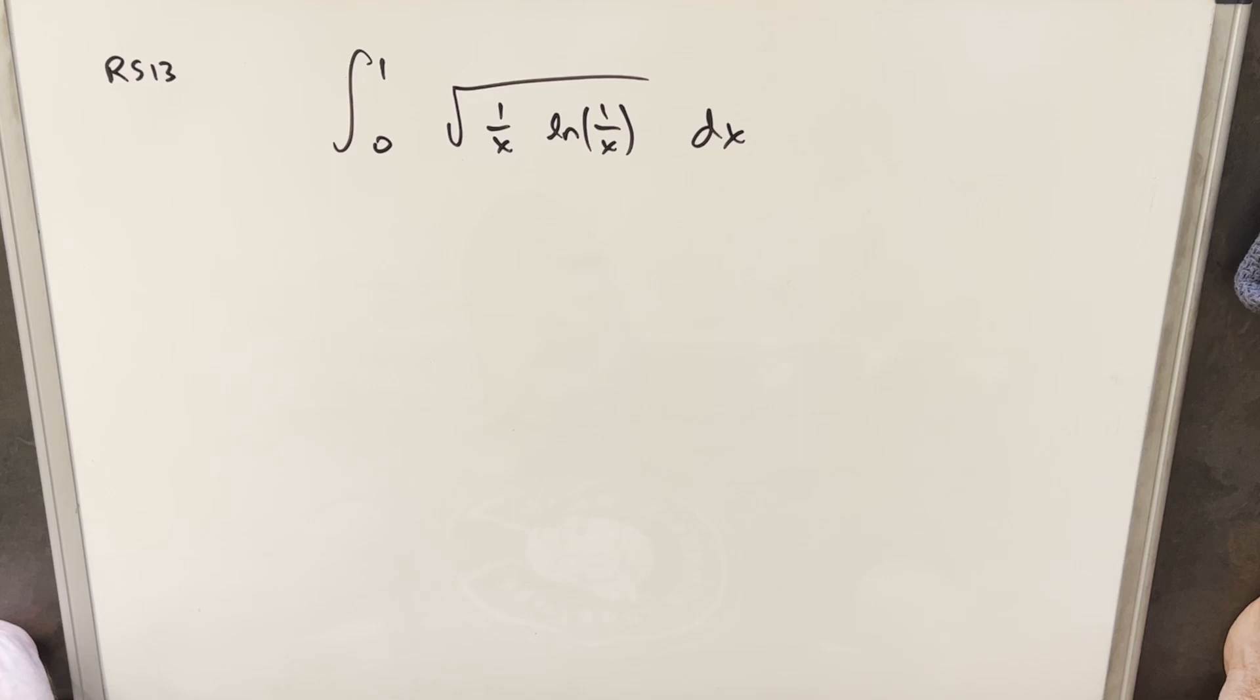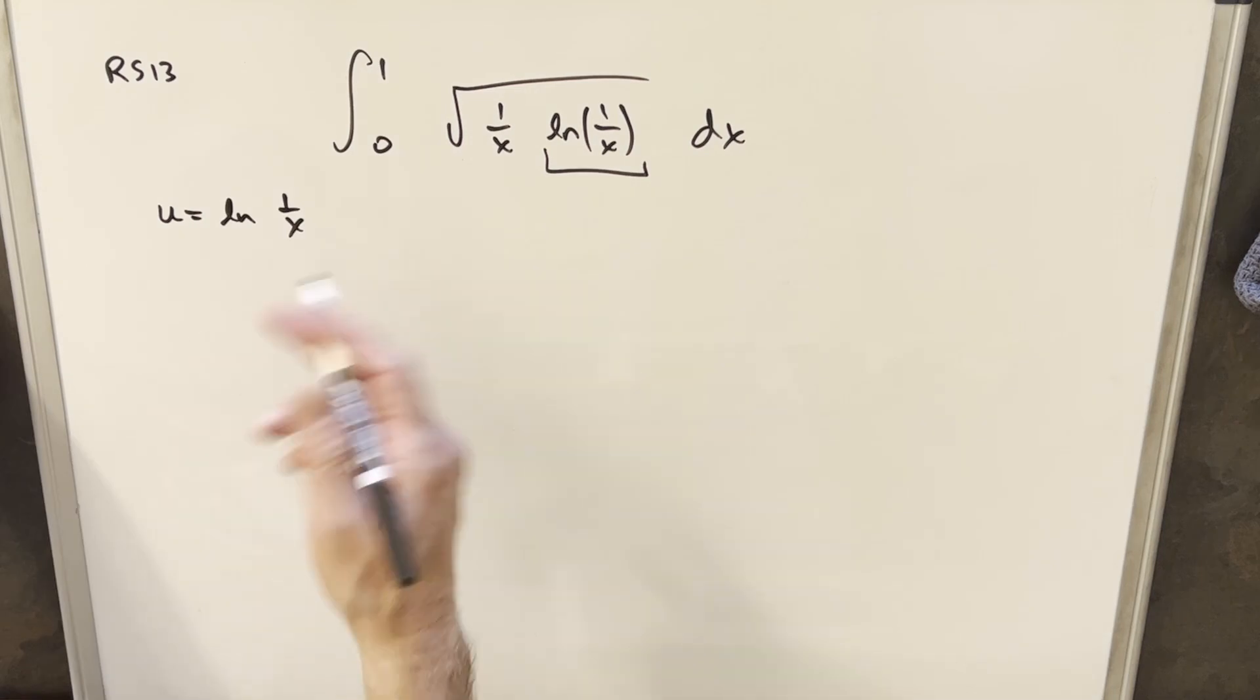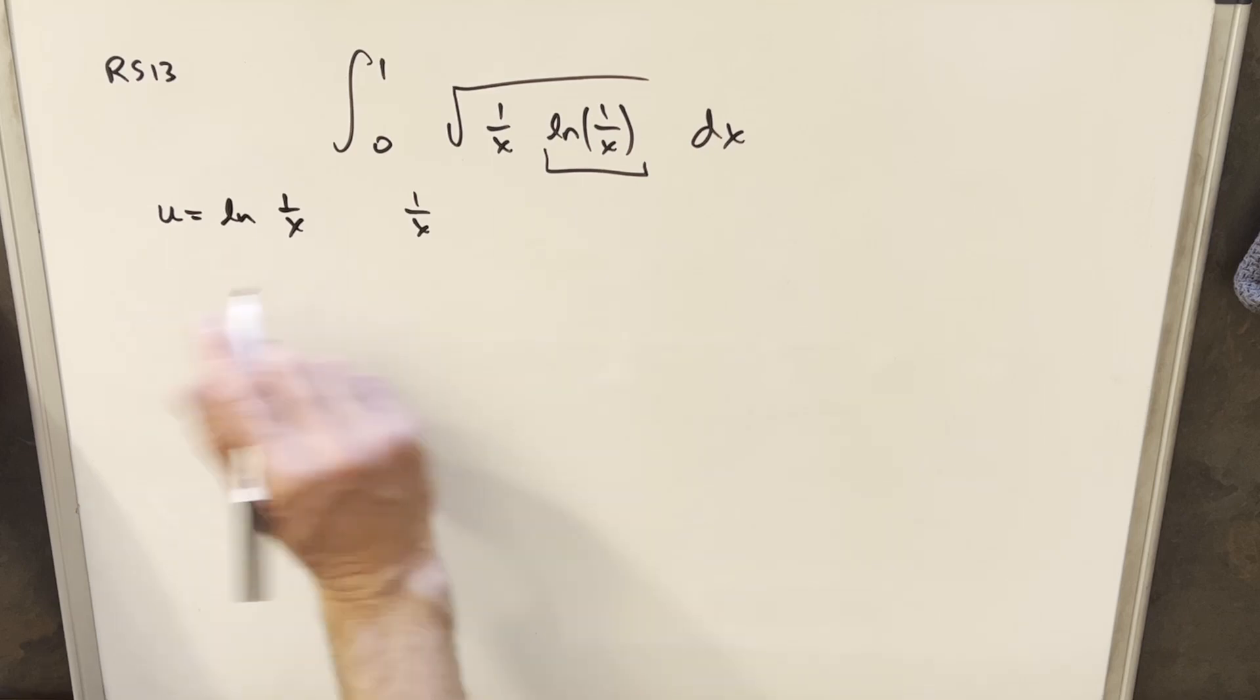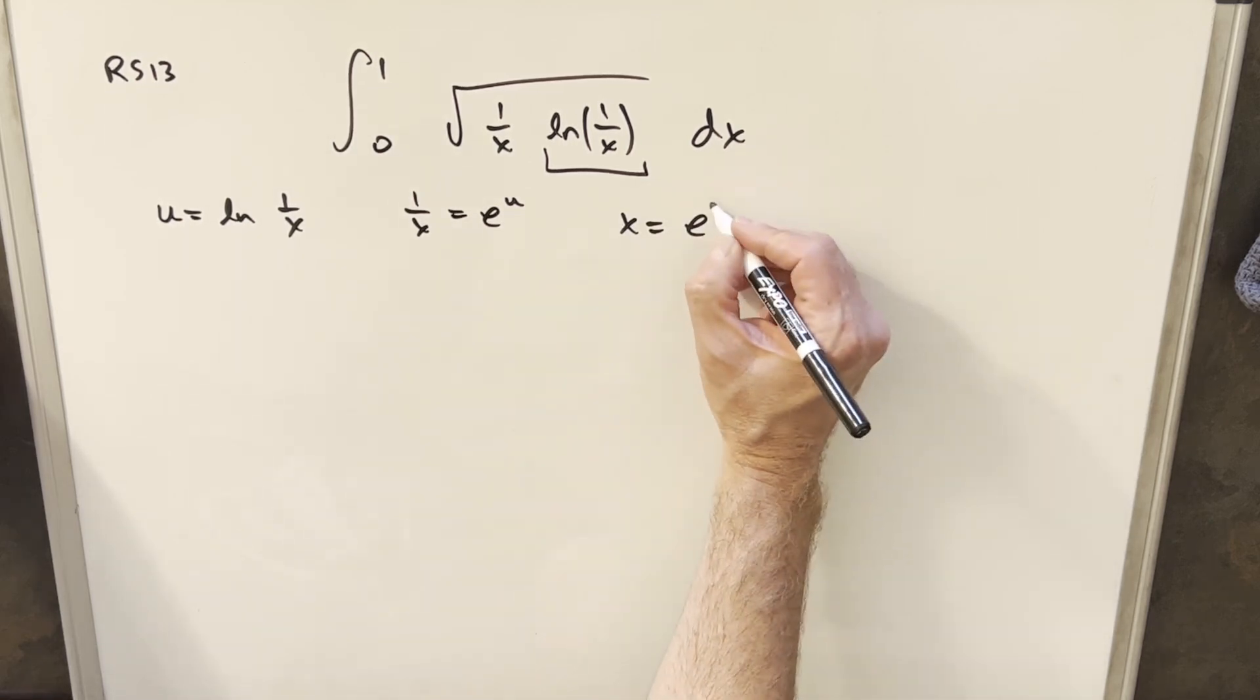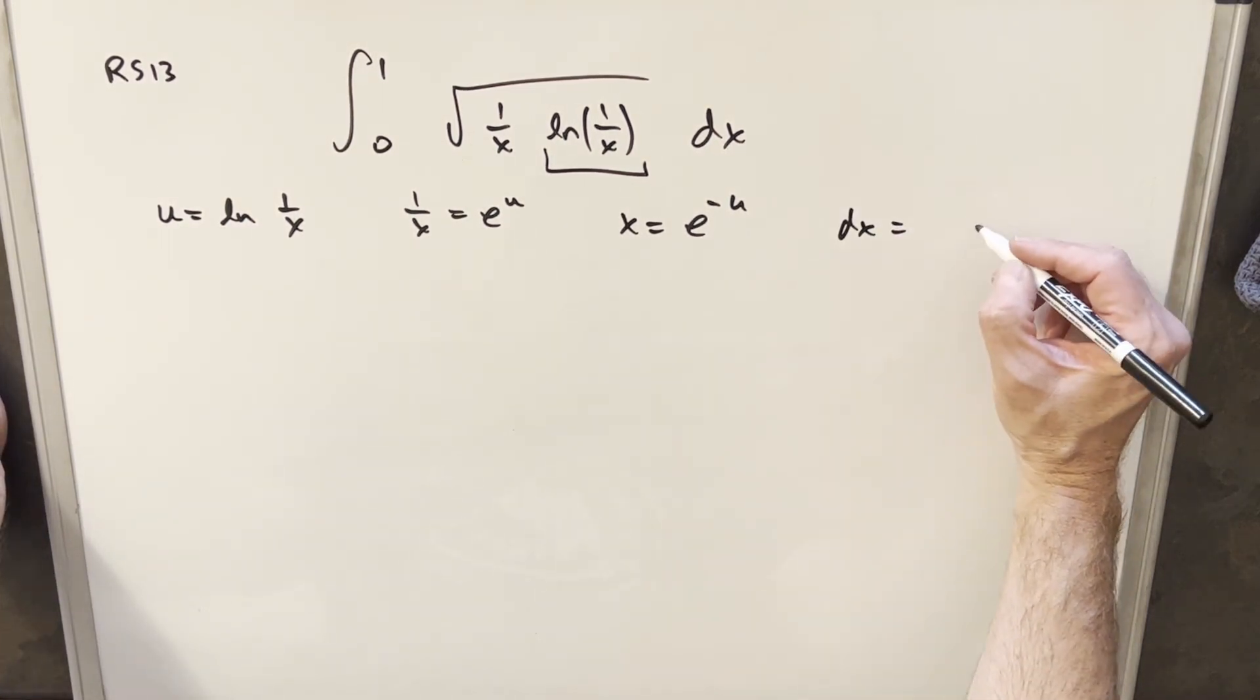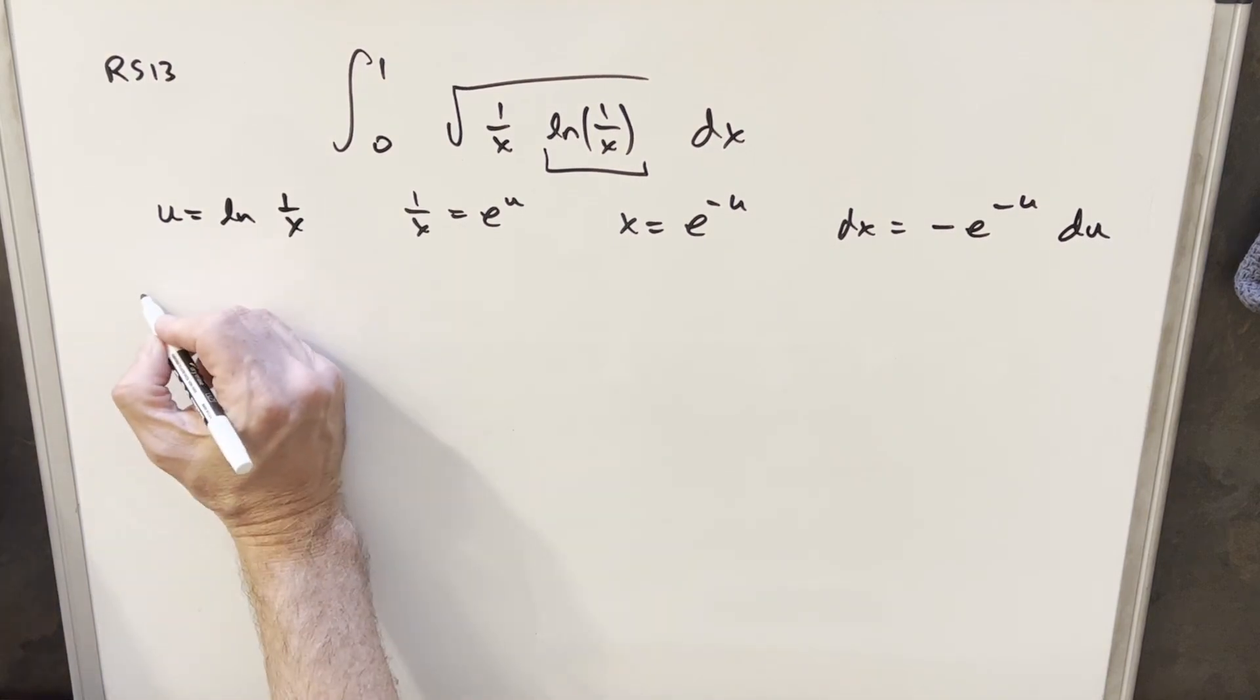What I did when I was looking at this was I fooled around with a lot of different substitutions. What I want to try as a u substitution is u equal to ln of 1 over x. With log properties, we can see that 1 over x is equal to e to the u. So x is the same as e to the minus u. Taking the derivative to get our dx, derivative of e to the minus u is e to the minus u, bring a minus out front, du. Now I have everything I need for my substitution.